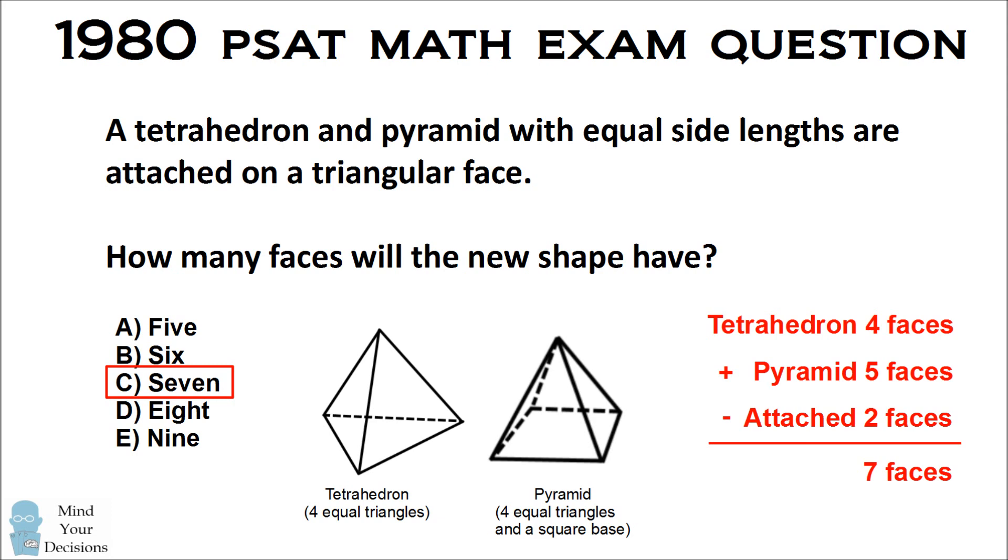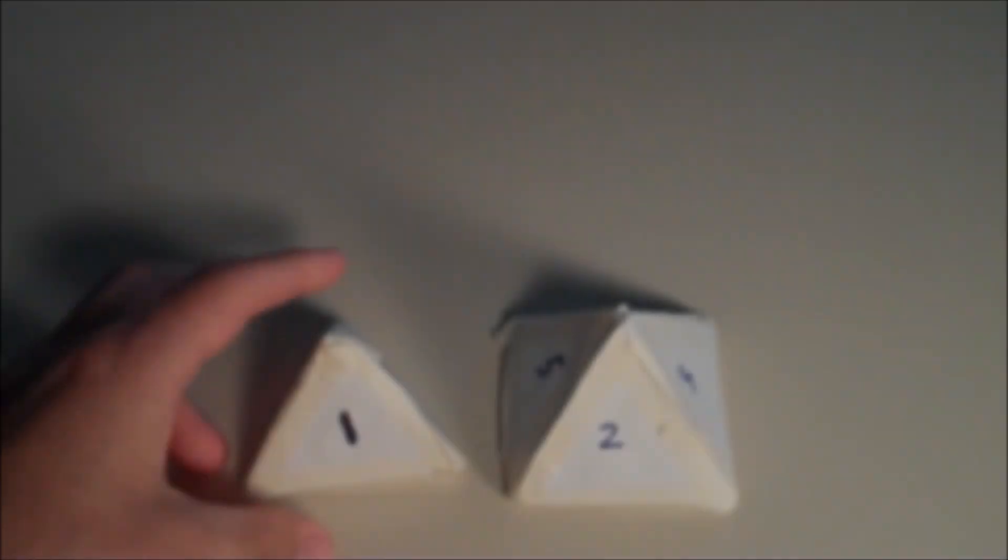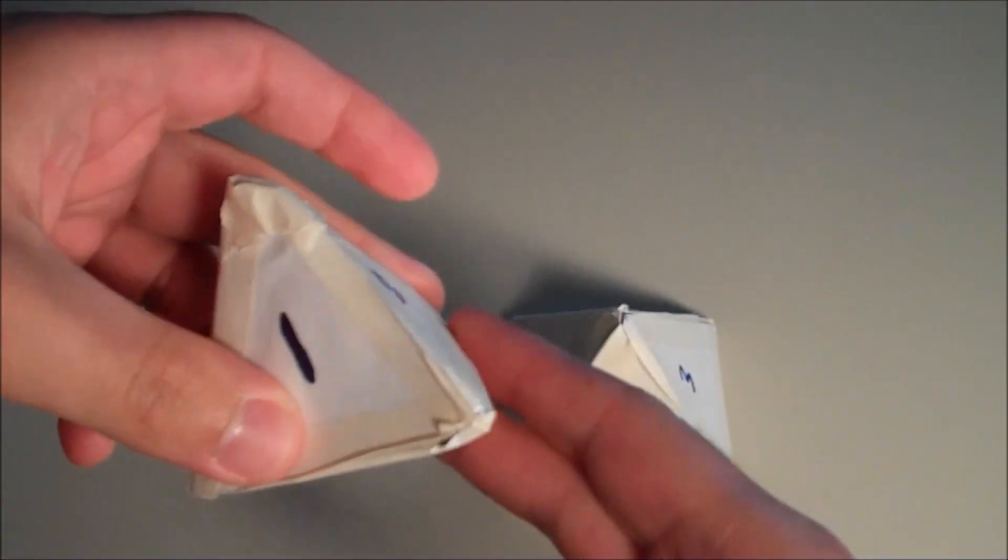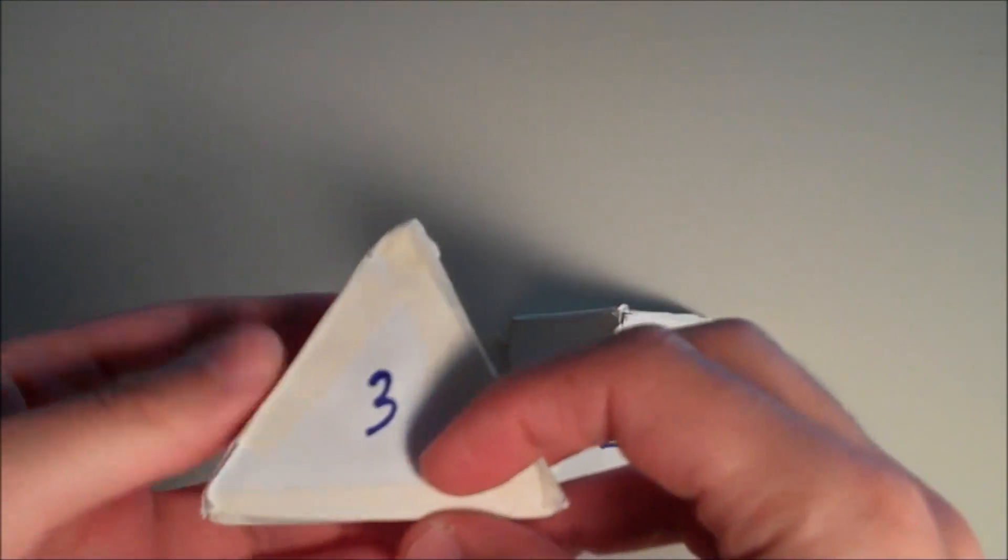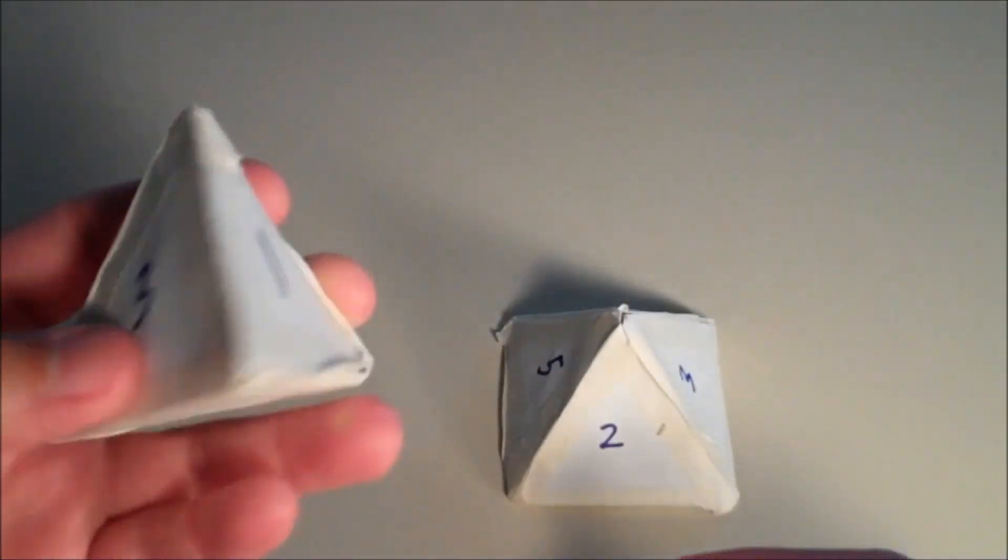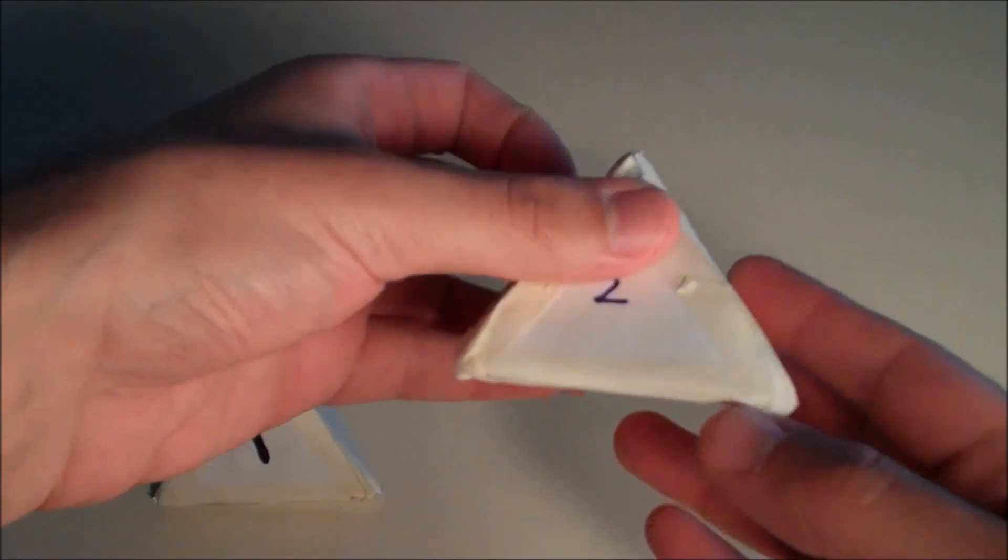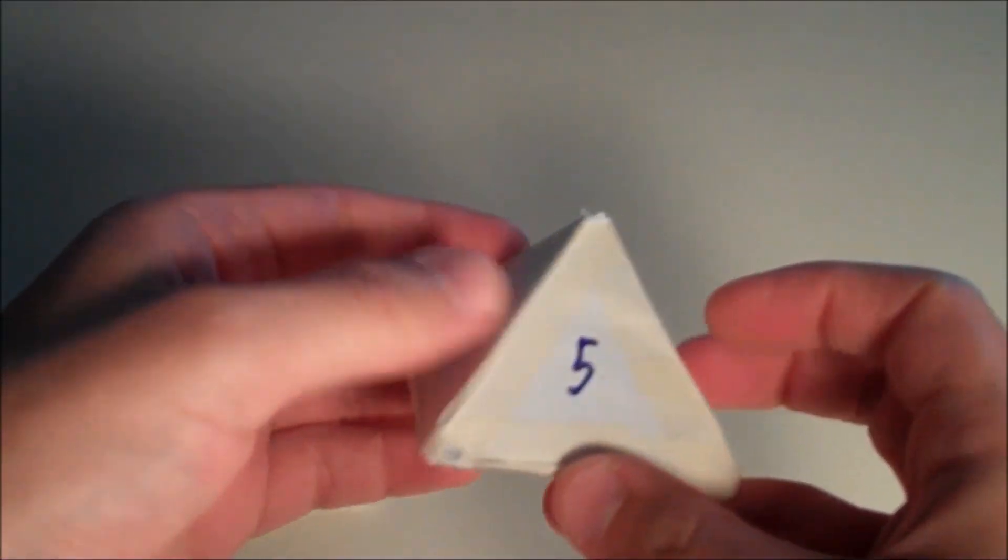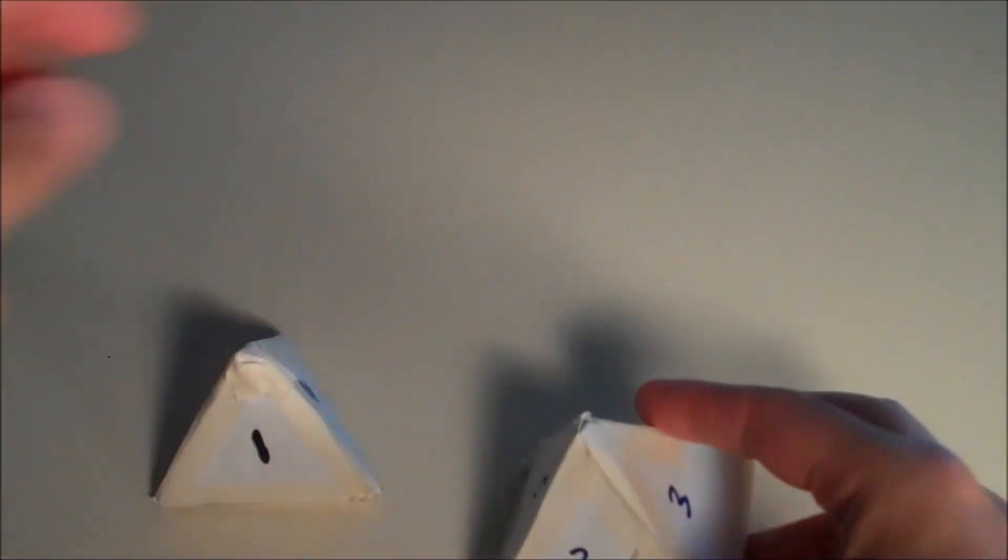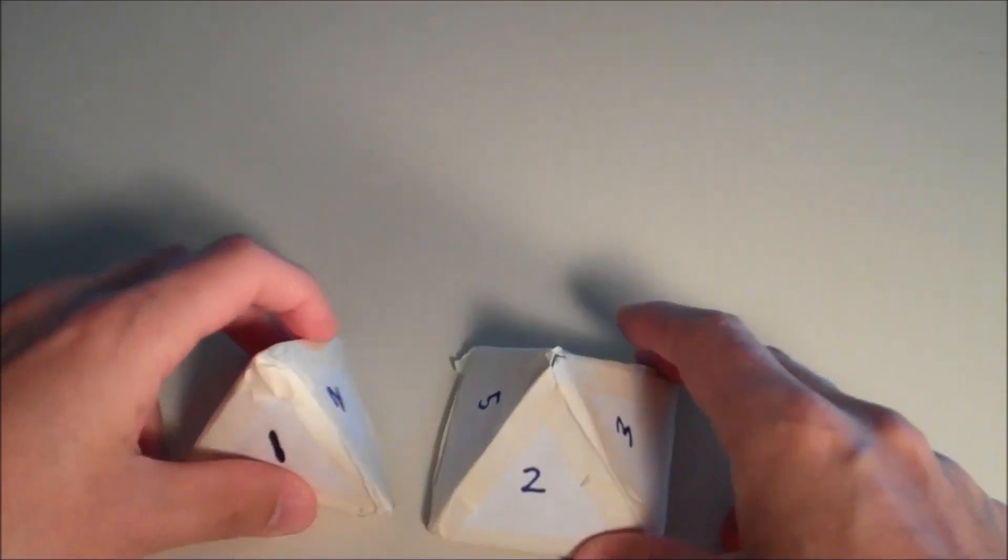So let's see what happens when we build this question into models. I have built a cardboard cutout of a tetrahedron. I've numbered the sides 1, 2, 3, and 4. I've also built this regular pyramid. It has a square base and four triangular sides, so I've numbered the faces 1 through 5.